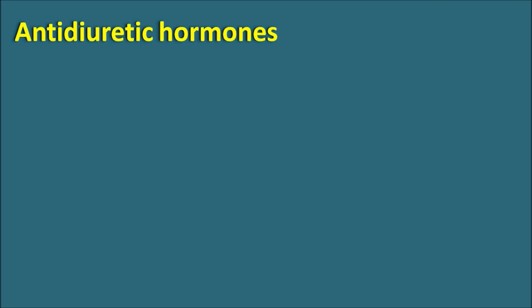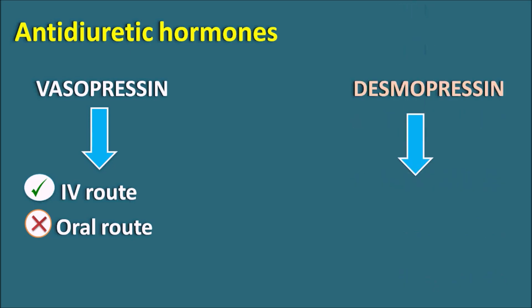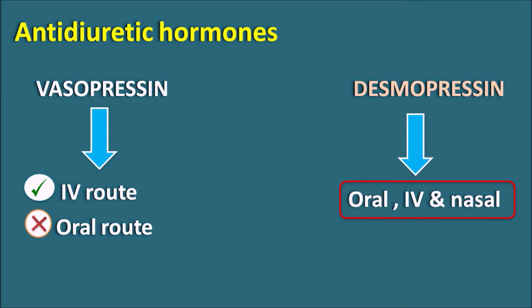The next topic is antidiuretic hormones. Vasopressin is given by IV route and is not suitable by oral route. The related drug desmopressin can be given by oral route, IV route, or nasal route of administration. Because vasopressin is an antidiuretic hormone that increases water absorption, both vasopressin and desmopressin can be given in hypotensive shock as well as sepsis conditions. Desmopressin can also be given for nocturnal bed-wetting, particularly in children.